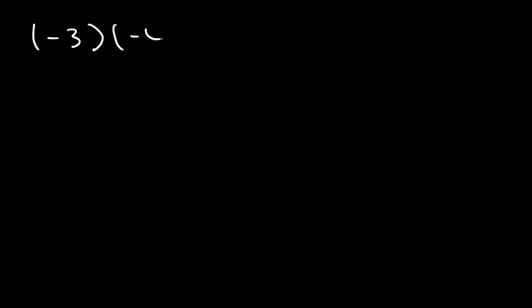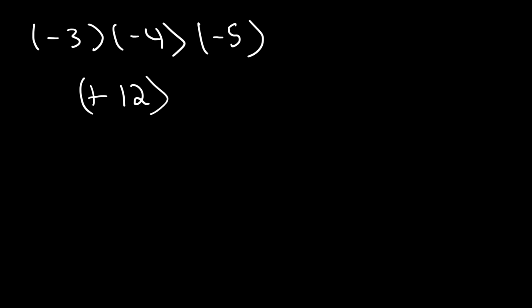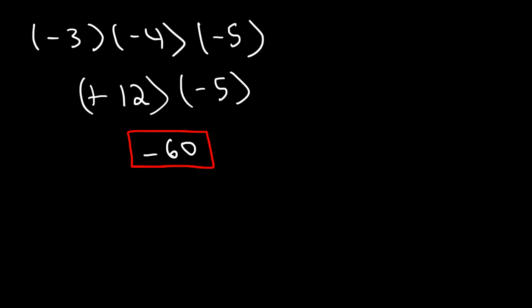Here's another example: what's negative 3 times negative 4 times negative 5? Negative 3 times negative 4 — same signs give a positive — 3 times 4 is 12, so that's positive 12. Now what's 12 times negative 5? 12 times 5 is 60, so 12 times negative 5 is negative 60. That's the answer.